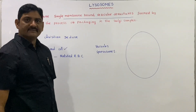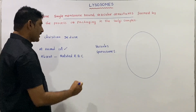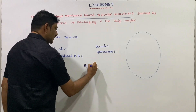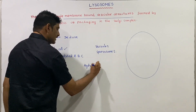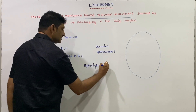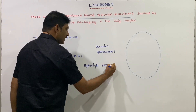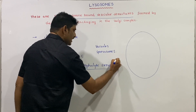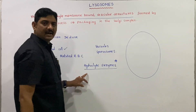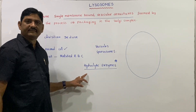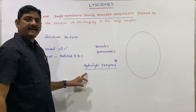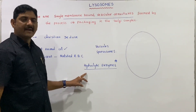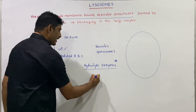Lysosomes consist of hydrolytic enzymes. These hydrolytic enzymes are present inside the cell organelle lysosomes. These hydrolytic enzymes work at an acidic pH.